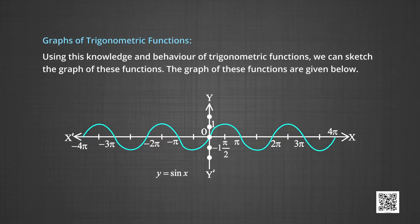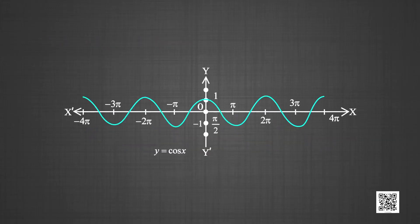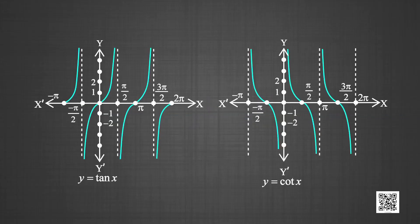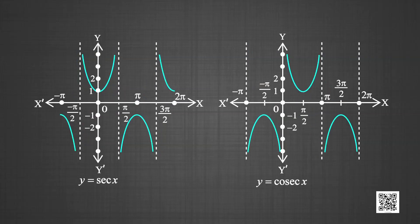The graphs of these functions are shown below. First, this is the graph of the sin function. Second is the graph of the cos function. Then the graph of y = tan x and the graph of y = cot x. This also shows the graph of the sec function and the graph of the cosec function.